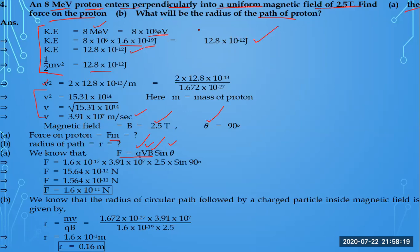The force has been calculated. For the calculation of force, you need the charge, the speed at which the charge particle moves, the strength of the field the charge particle enters, and the angle at which it enters. With all these values, you can calculate the force acting on the charge particle. Next, the radius of the circular path followed by a charge particle inside a magnetic field is given by a specific formula.